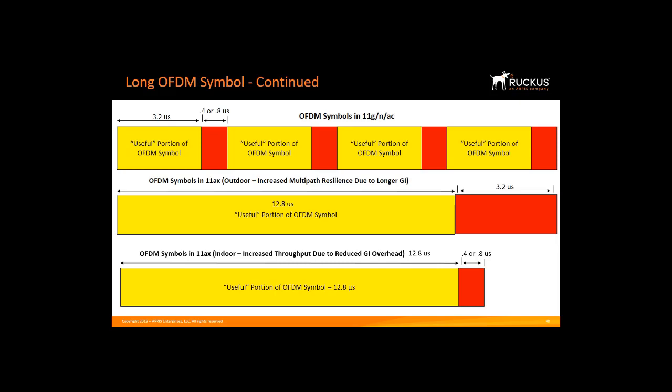Our 11AX APs will adjust this automatically. The guard interval depends on the environment the AP is installed in. Our APs optimize numerous parameters: BeamFlex Plus will try to maximize throughput first, along with determining which modulation coding scheme to use, whether to use multi-user MIMO or OFDMA, and which size of guard interval to use for the environment. When the AP is mounted outside, it will first try 0.8 microseconds to maximize throughput. If it realizes this doesn't work as well, it will try the 3.2 microsecond guard interval.